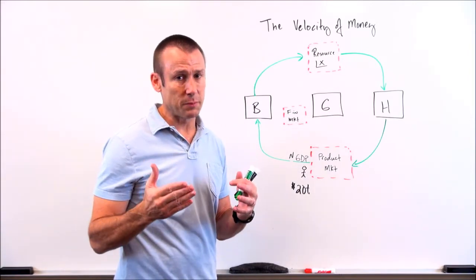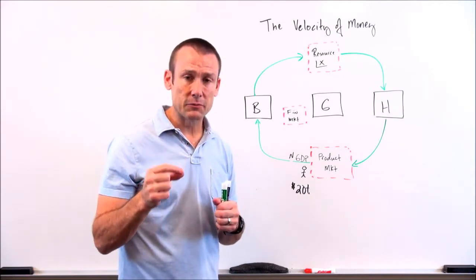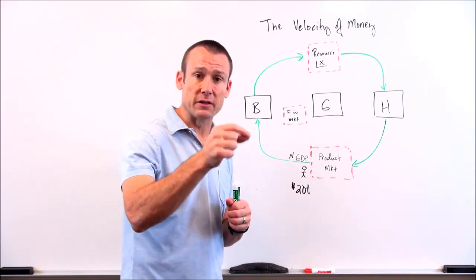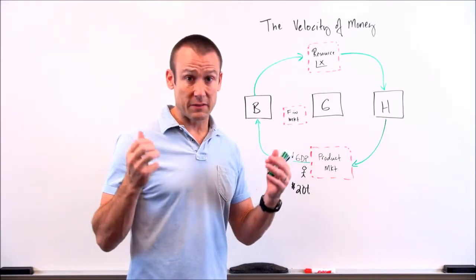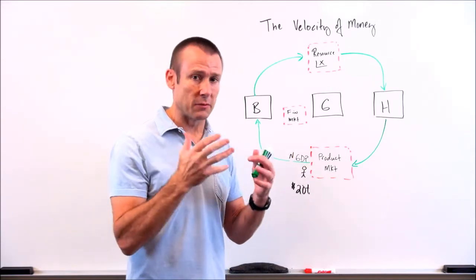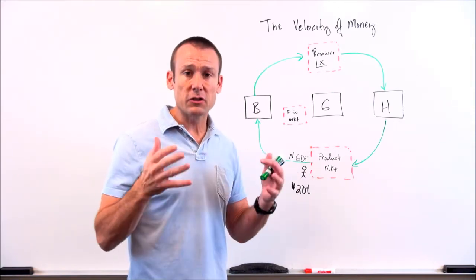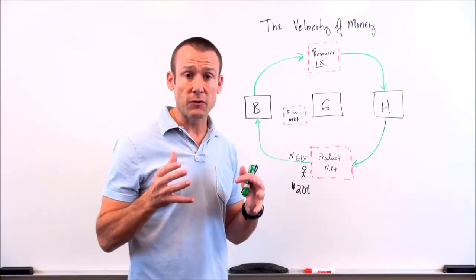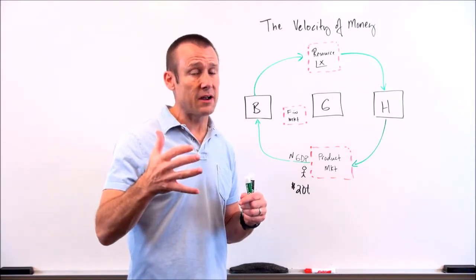Which brings us back to that concept, the velocity of money. What is that definition again? The number of times the average dollar gets spent in a year. And let's just for the sake of argument say that that number is five. Sometimes we've seen estimates out there four, five, six, seven. Let's just say it's five right now. Well, if the velocity of money was five, that means the average dollar gets spent five times in a year.